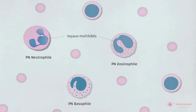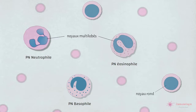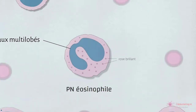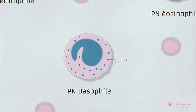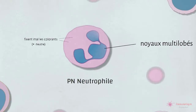Les granulocytes ont des noyaux multilobés, les rendant facilement distinguables des autres globules blancs, les lymphocytes, dont les noyaux sont ronds. Les sous-types de granulocytes diffèrent par les caractéristiques de coloration de leurs granules cytoplasmiques. Le cytoplasme des éosinophiles contient des granules qui se colorent d'un rose brillant, alors que les basophiles contiennent de gros granules qui se colorent en bleu foncé. En revanche, les granules des neutrophiles ne se colorent pas fortement avec les deux colorants.